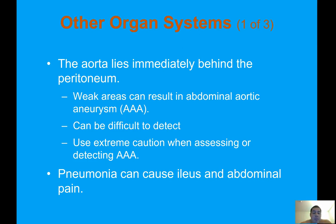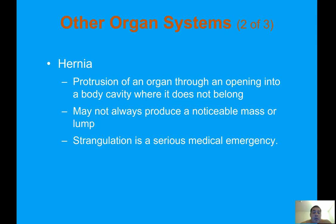Pneumonia can cause ileus and abdominal pain. A hernia is a protrusion of an organ through an opening to a body cavity where it does not belong. It may not always produce a noticeable mass or lump, though hernias are usually visible in the groin or lower quadrant area. Strangulation is a serious medical emergency, as the hernia can cut off circulation.